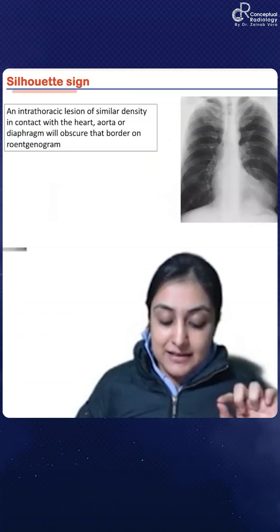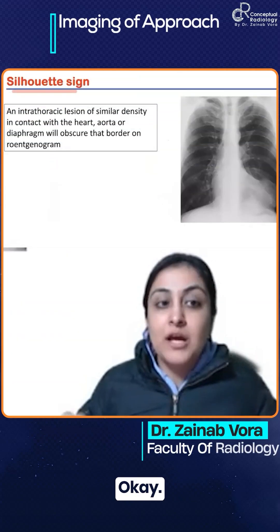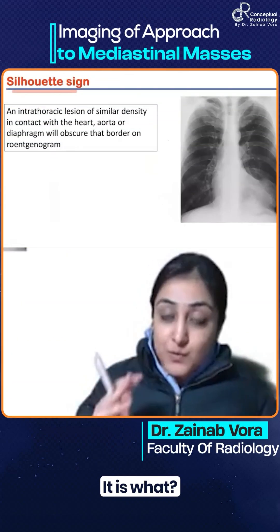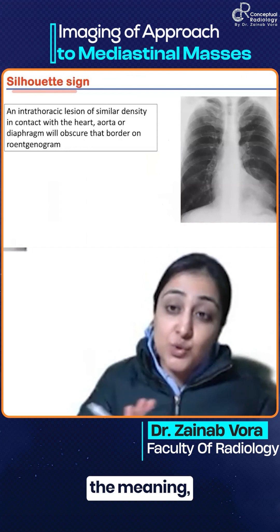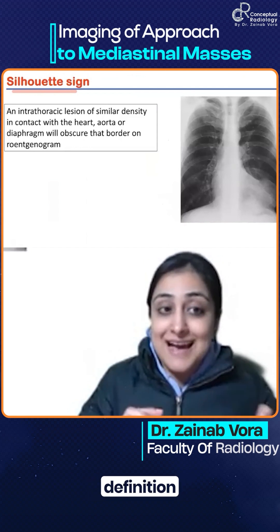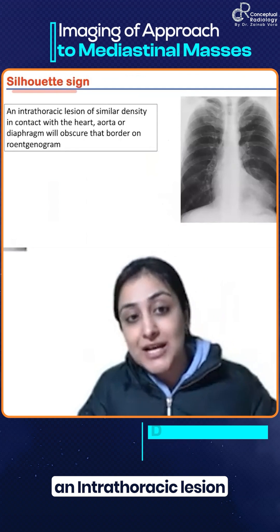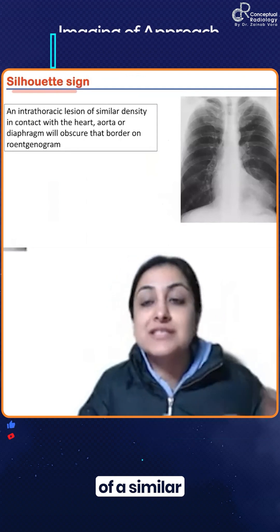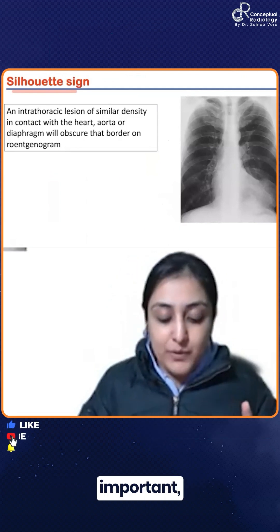The silhouette sign — remember these words. It is important to know the exact definition: when there is an intrathoracic lesion of a similar density — and the density has to be similar — it will obscure a border on the X-ray.